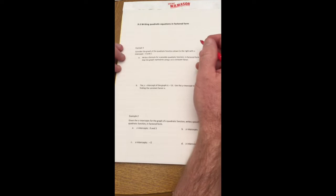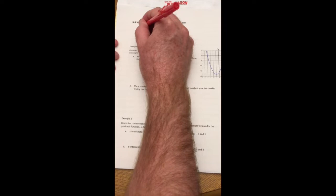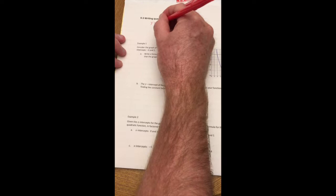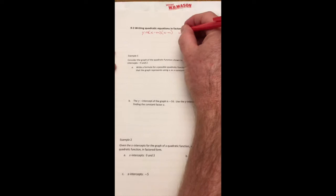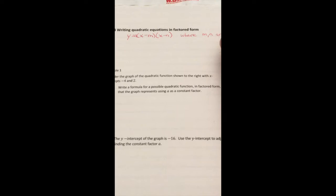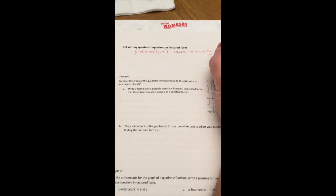We will start by looking at the actual formula for factored form. Y equals, put an A there, X minus M, X minus N, where M and N are the solutions or X-intercepts.